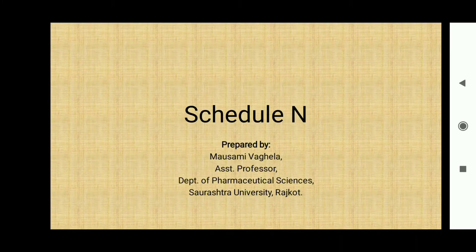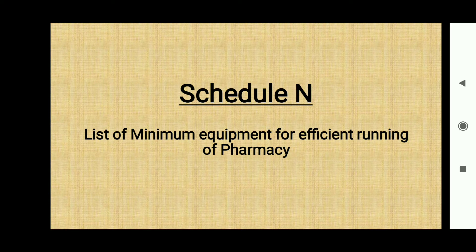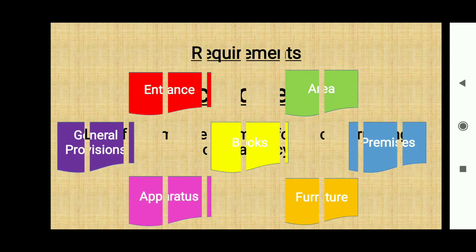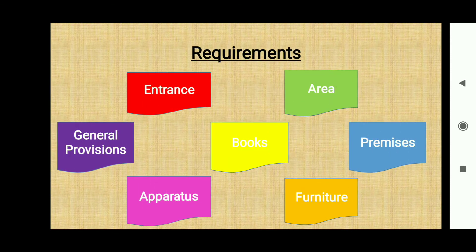Hello everyone, today we are going to learn about another schedule of the D&C Act, and that is Schedule N, which every pharmacist should be aware of. Schedule N provides the list of minimum equipment for efficient running of a pharmacy. It talks about various requirements like entrance, area, books, general provisions, premises, apertures and furniture.